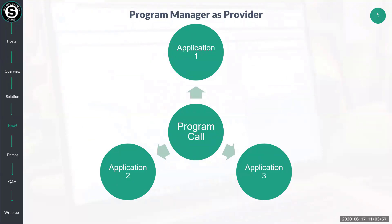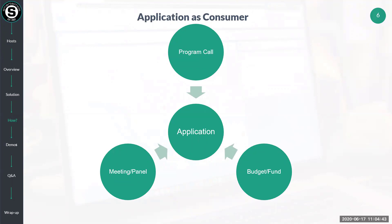Here's a simple example of what I mean. If we take a program call, one program call can be associated with many different applications, and all of the same rules from that particular call can be applied to the applications being submitted. Each program, typically configured as a level one record, can have multiple calls — a quarterly call, an open call, multiple calls a year as needed. You can define separate rules for each call: maybe a maximum request amount, maybe a total program budget. Those are the kinds of things we can enforce with the consumer provider relationship. And here we have the application acting as a consumer — one application can pull or consume rules and data from multiple different UTAs, such as meetings or panels, budgets or funds, and programs and calls.